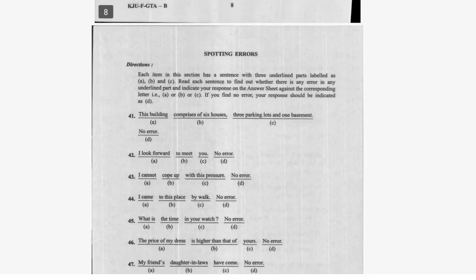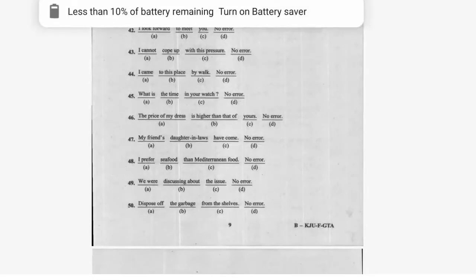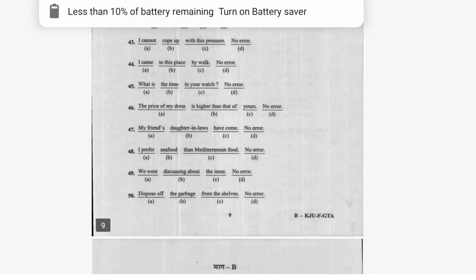Now we spot the errors. Question 41: 'This building comprises of six houses' — the error is 'of'; option B, the correct form is 'comprises'. Question 42: 'I look forward to meet you' — option B has the error; it should be 'to meeting'. Question 43: 'I cannot cop up' — option B is the error.